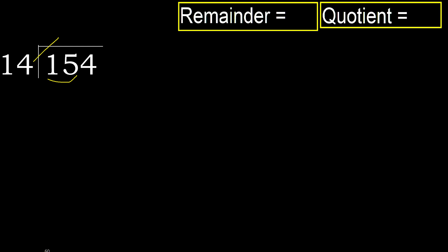But not greater. 14 multiplied by 2 is 28 — 28 is greater. 14 multiplied by 1 is 14 — 14 is not greater. Ok, subtract: 15 minus 14 is 1.